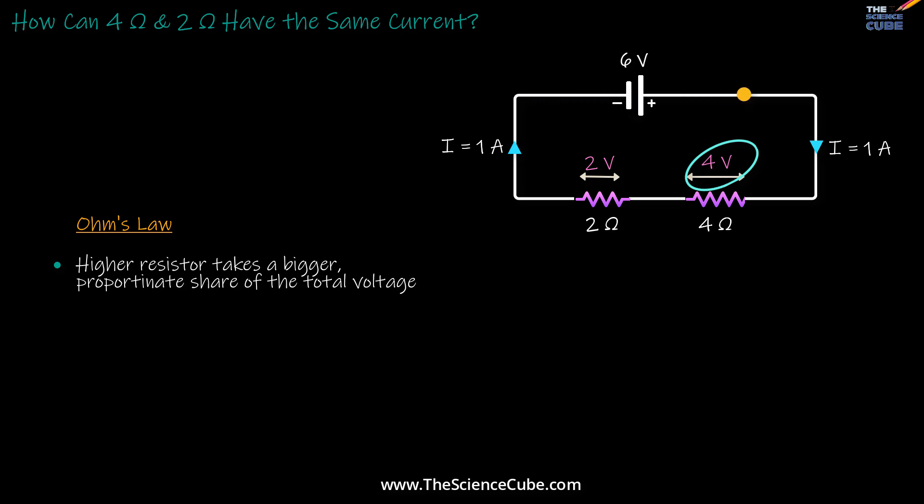Now think about what this larger voltage drop means. A bigger voltage drop across a resistor means a stronger electric field inside it. And what does a strong electric field do?